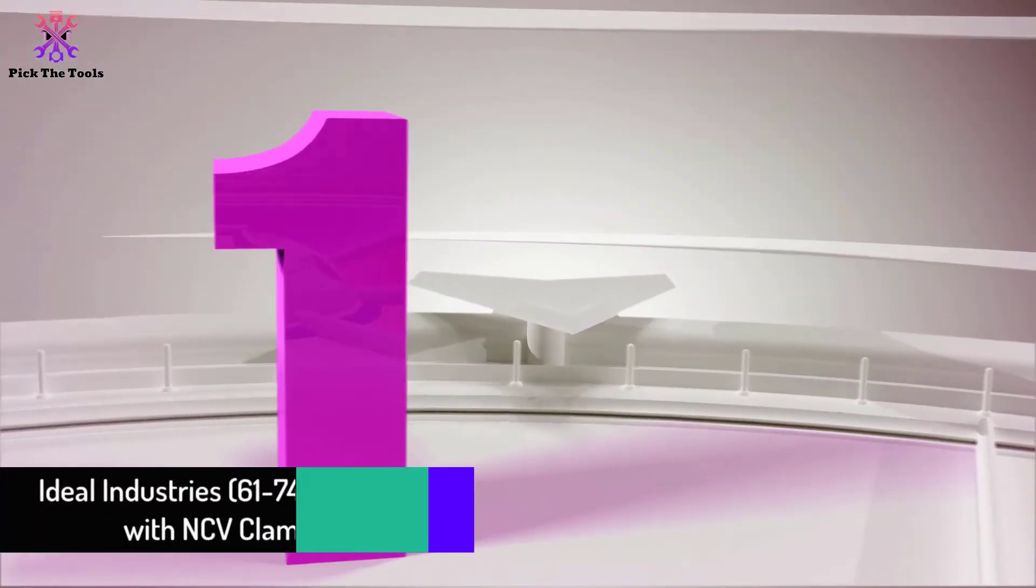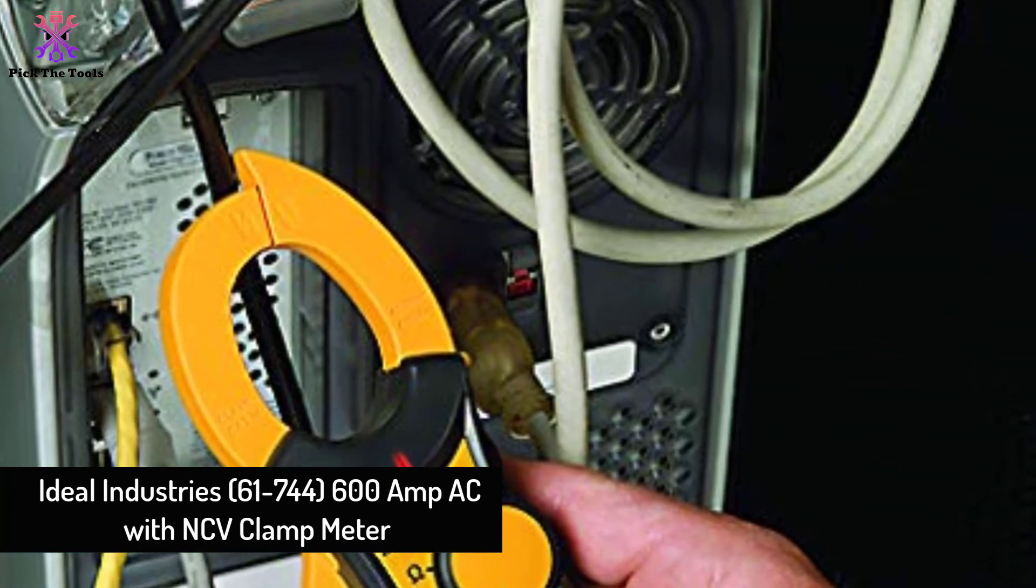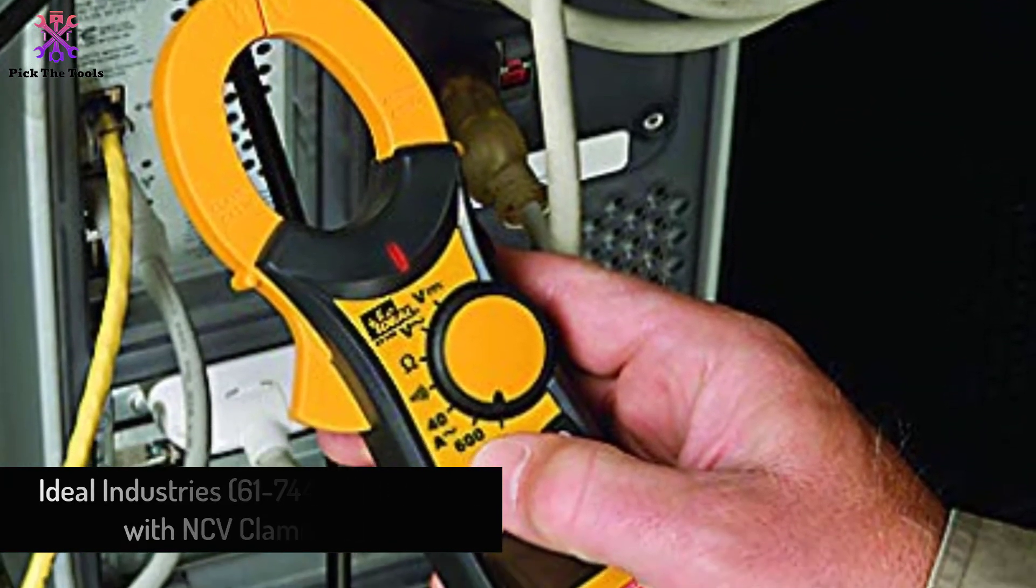And finally at number 1, we have the Ideal Industries, 61-744, 600 Amp AC with NCV clamp meter.